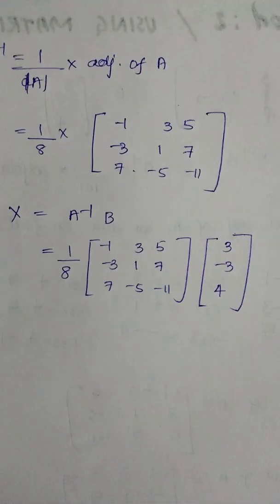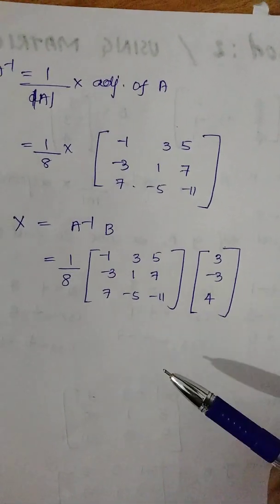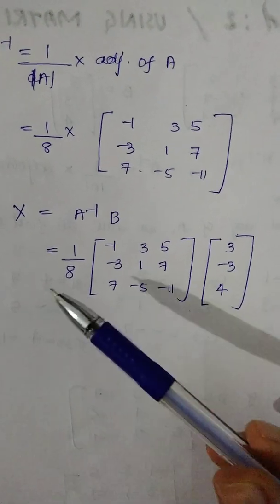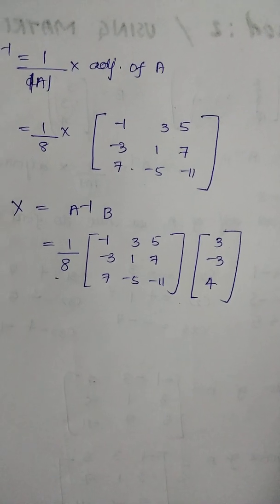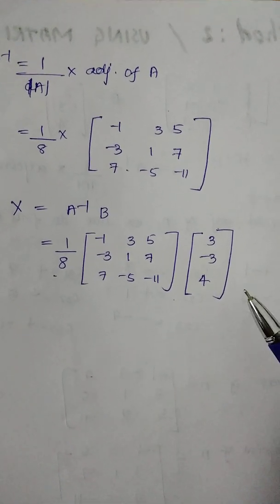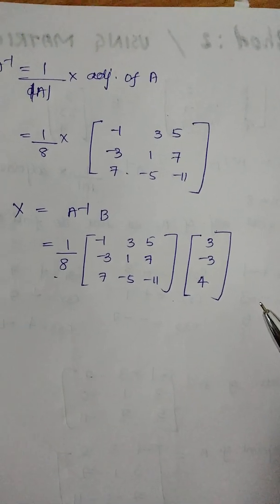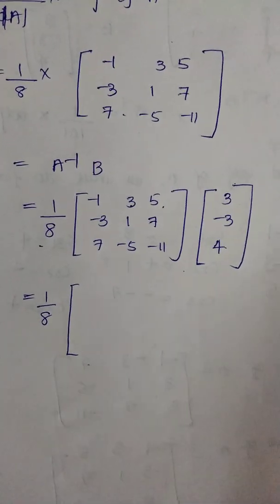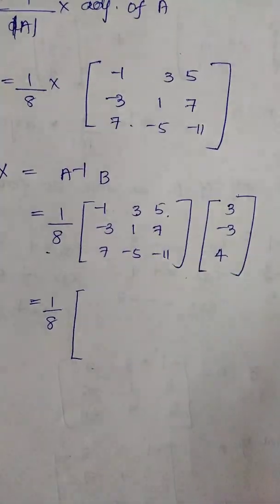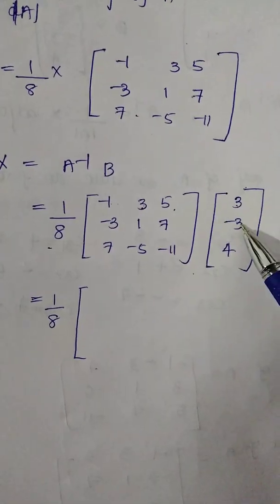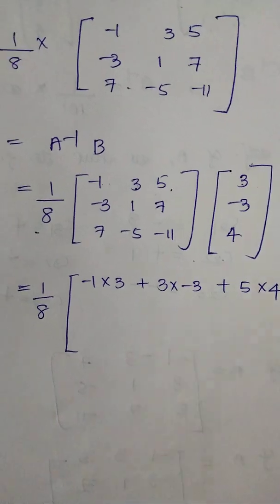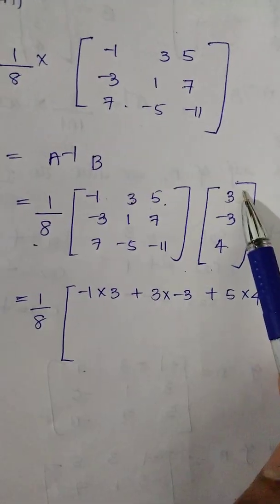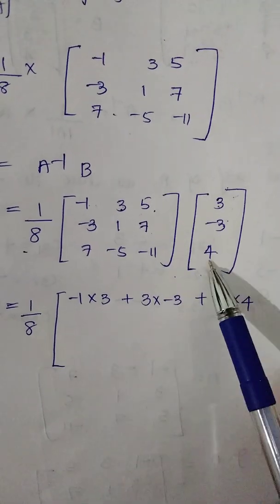Now we will divide the term. This is the next step: x equals A inverse b. That is the answer. Here we do the matrix multiplication. Now let us see the matrix multiplication: minus 1 into 3, plus 3 into minus 3, plus 5 into 4. Also minus 3 into 3, plus 1 into minus 3, plus 7 into 4.